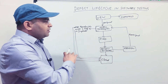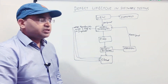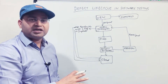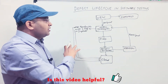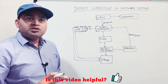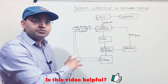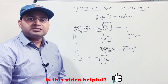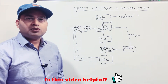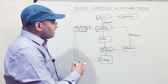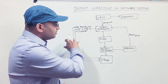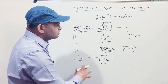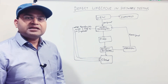This defect lifecycle is common across any project — you will find all these states, statuses, and resolutions most of the time. However, organizations may require additional statuses and resolutions beyond these. The defect lifecycle does not fit every organization the same way; some may want a more granular approach with multiple statuses and a different way of tracking defects, so they customize the workflow.